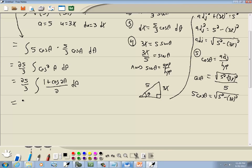I can take that 1 half and put it out in front, so I got 25 over 6, 1 plus cosine 2 theta d theta. And I'll split this into separate integrals: 1 d theta plus cosine 2 theta d theta.